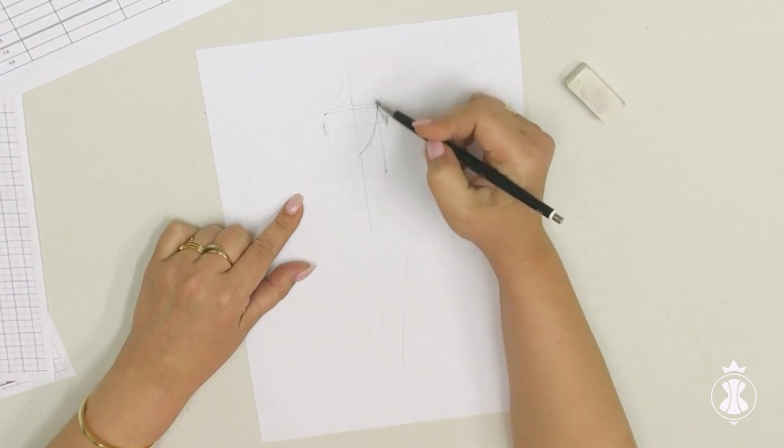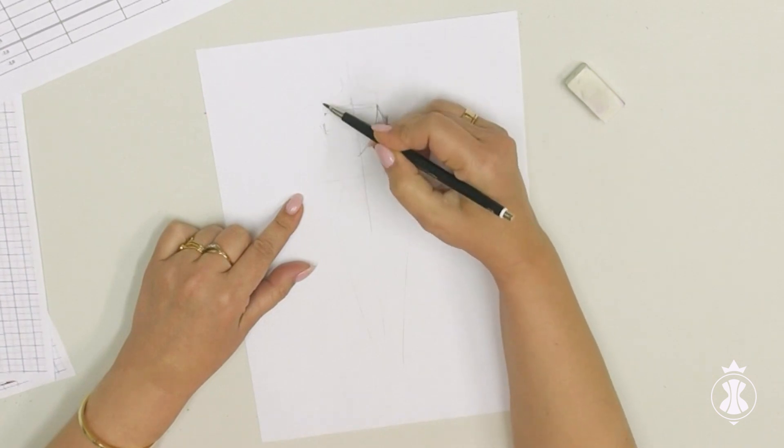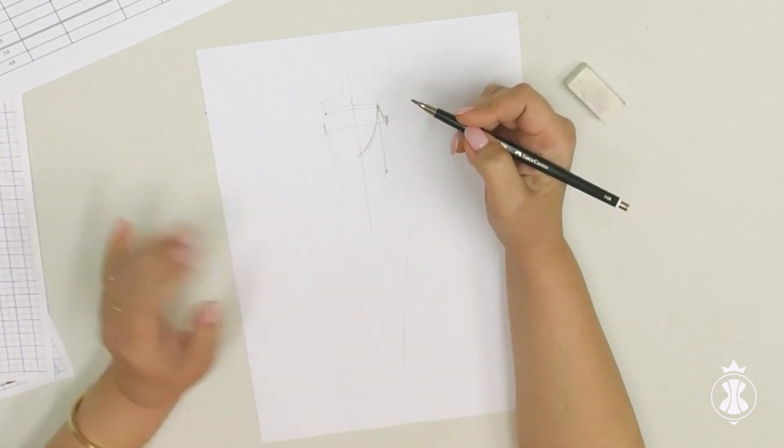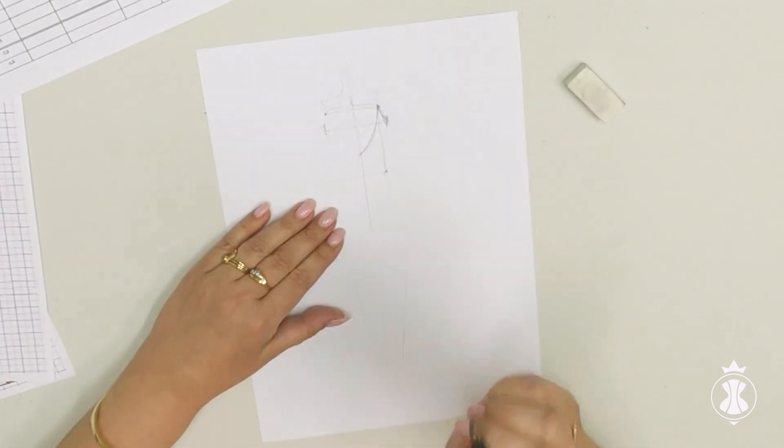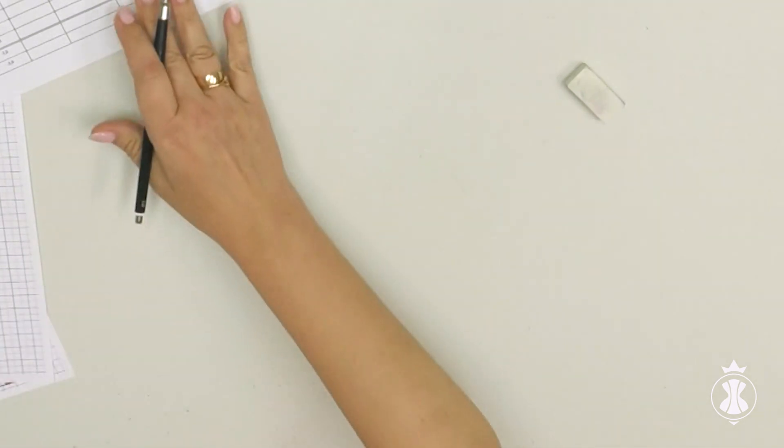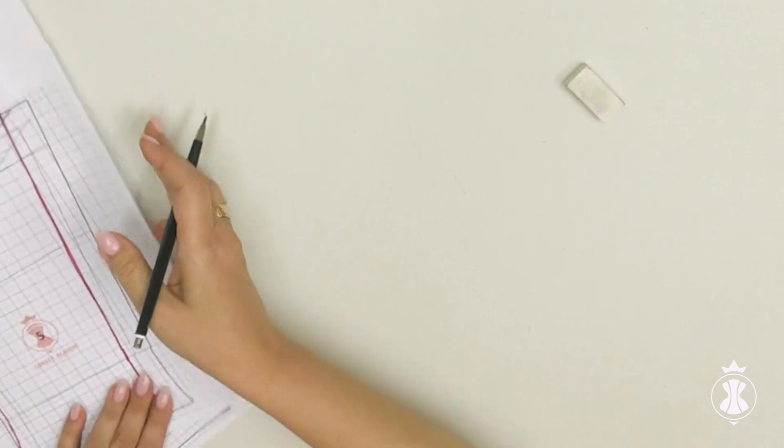It happens quite often that it is better to shift the corner to one side due to peculiarities of the body, for example. Later, we will use one more measurement, back height, to determine the depth of the back neckline.